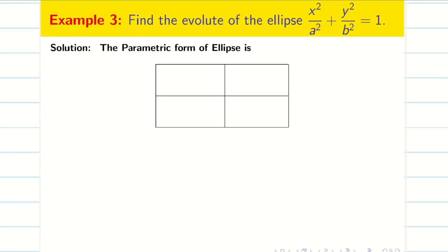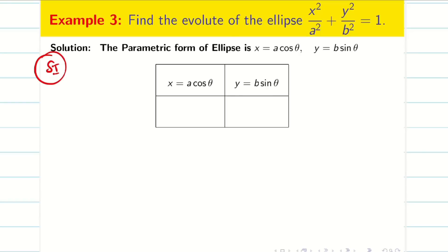The parametric form of the ellipse is x = a cosθ and y = b sinθ. That completes step 1 — writing the parametric form.